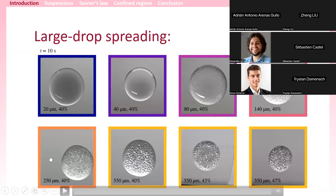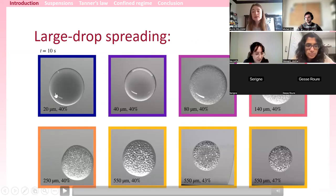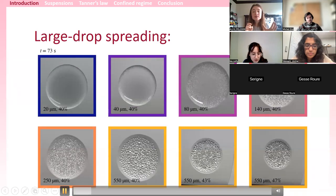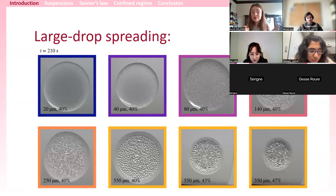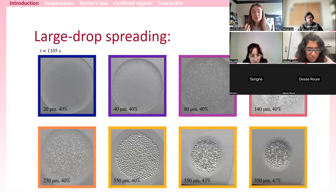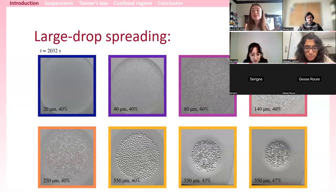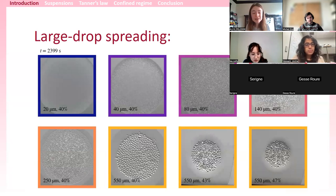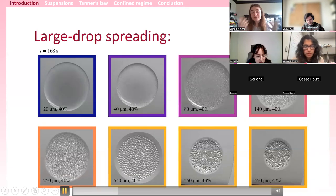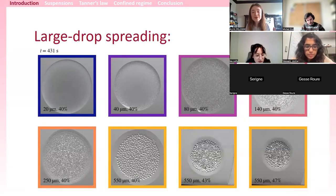This is the subject of a paper we published last year. Today I focus not only on the contact line but on the dynamics of the drop as a whole, and in particular whether Tanner's law — which describes macroscopic spreading — still applies when I have a suspension and when confinement on the particles is increasing. The way to tune this confinement is to change the particle size, going from 20 microns to 550 microns, mostly at 40% volume fraction.